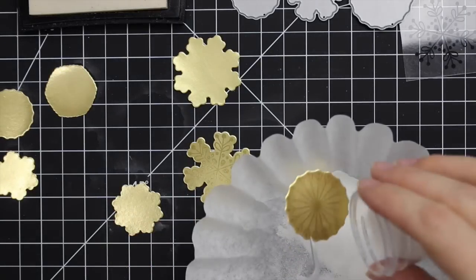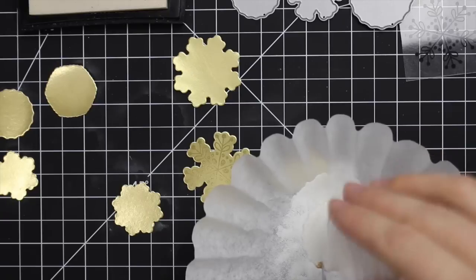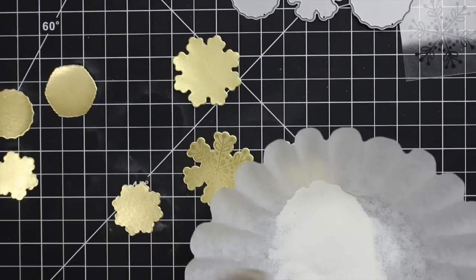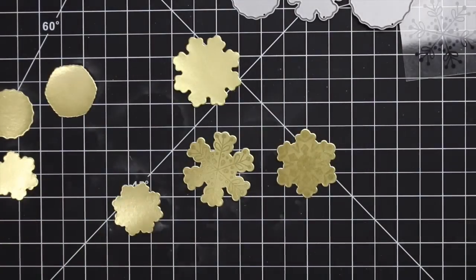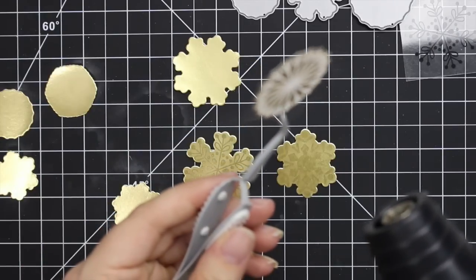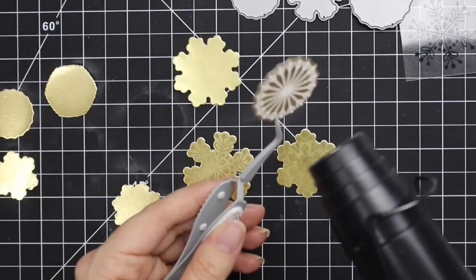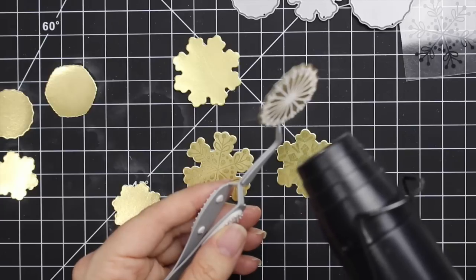I stamped the snowflakes with Versamark ink. With a cardstock like this with a foil coating, you need to be careful to stamp straight up and down and not wiggle your stamps because it can slide around a bit on the coating with the Versamark ink. It's just a little bit more of a slippery surface, so not really difficult, you just kind of have to pay attention.